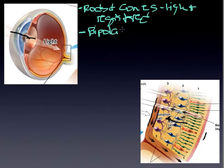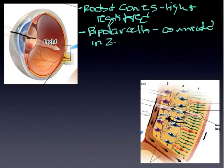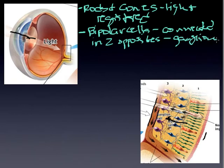And we call them bipolar because, not because they have huge mood swings, but because they are connected in two places. They are connected to the ganglion cells on one side in two opposite poles. So essentially, on one end, they are connected to the ganglion cells, and on the other end, they are connected to the rods and cones.